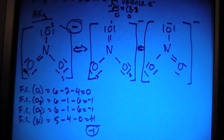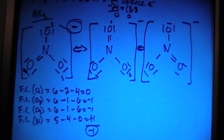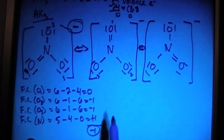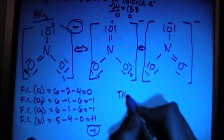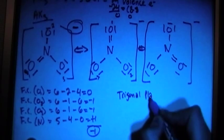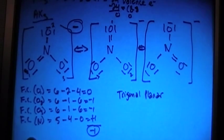So with that formal charge calculation working out correctly, we know that this is going to be a correctly drawn Lewis dot structure. And now, because this is AX3, this is going to be a trigonal planar molecule shape.